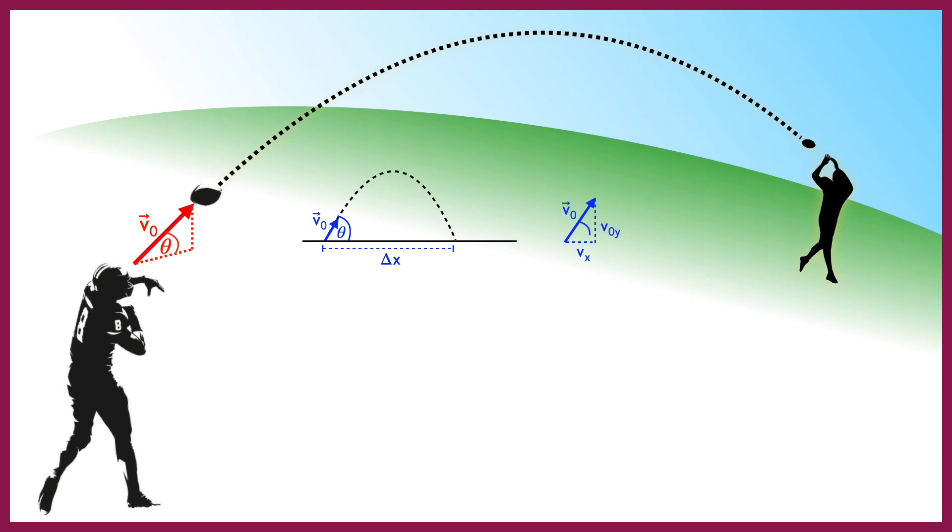Using our angle theta, we can rewrite that vx equals v-naught cosine theta, and v-naught y equals v-naught sine theta. Next, I'm going to set the initial height to be y equals 0. In our case, this is also going to be the final height.